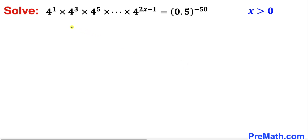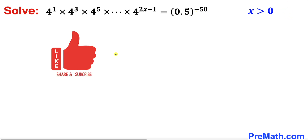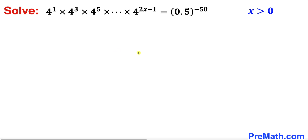Welcome to pre-math. In this video we are going to solve this given exponential equation: 4 power 1 times 4 power 3 times 4 power 5, all the way to 4 power 2x minus 1, equal to 0.5 power negative 50, where x is greater than 0. Please don't forget to give a thumbs up and subscribe. Let's go ahead and get started with the solution.